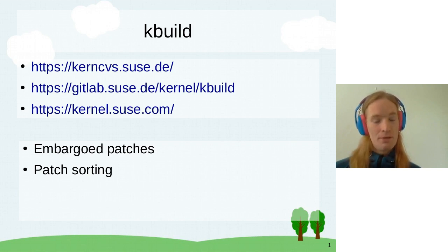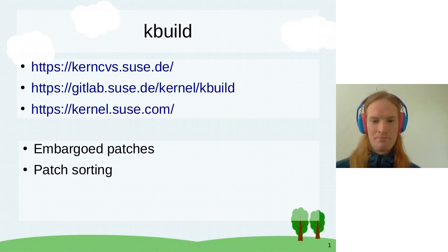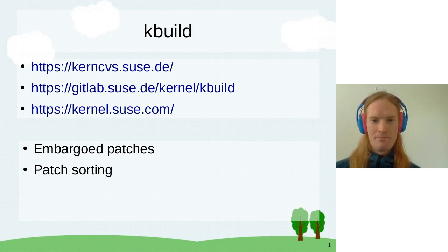If there are no more questions, maybe we can move to patch sorting. One last question on embargoed patches: the idea is that CVE embargoed branches would be auto-merged to the product embargoed branches — or how does the workflow actually look? I think it needs to be merged manually because the embargoed branches are most of the time outdated. We probably don't want auto-merges because you want to do minimal changes.